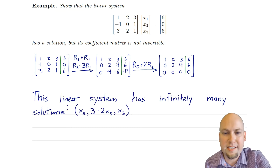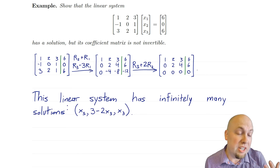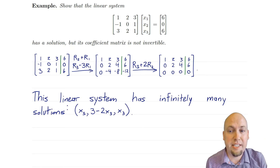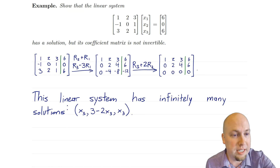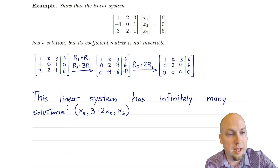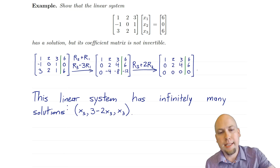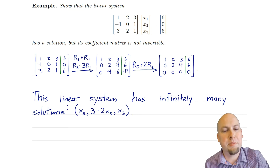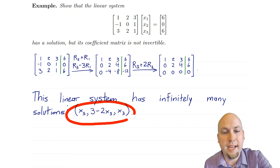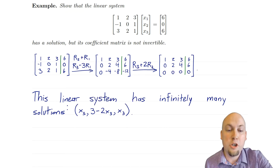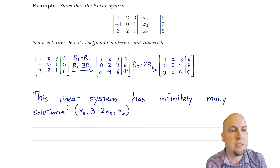From row echelon form we can see that this linear system has infinitely many solutions. If you look at these columns, there's a leading variable, there's a leading variable, but here's a free variable. So x3 can be anything you want, and then you do back substitution to find x1 and x2 in terms of x3.